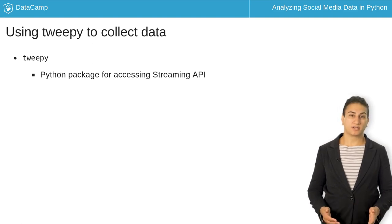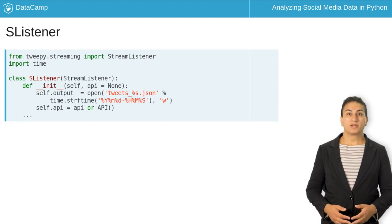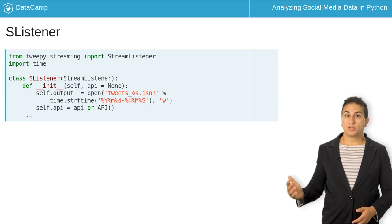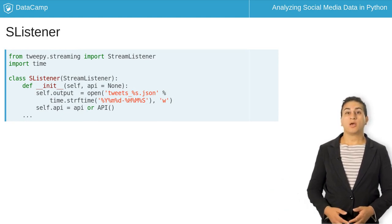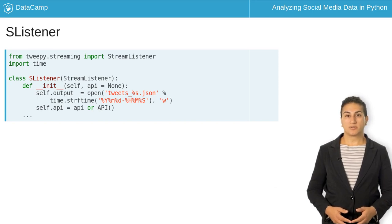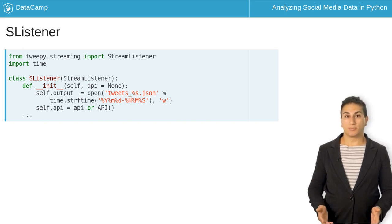TwiPi requires an object called SListener, which tells it how to handle incoming data. We've given you the code for this object, so you won't need to write it on your own. We'll show you the constructor here to give you an idea of what it does. Our SListener object inherits from a general StreamListener class included with TwiPi.